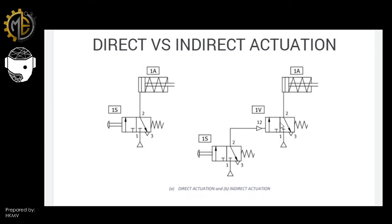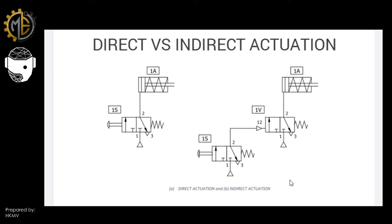Using indirect actuation also allows for a further operating distance for your input. Your input should be inside your control system while it controls the final control element, which is outside — located on the machines. Since a longer pipe increases the chance of leakages, indirect actuation is preferred in those cases.